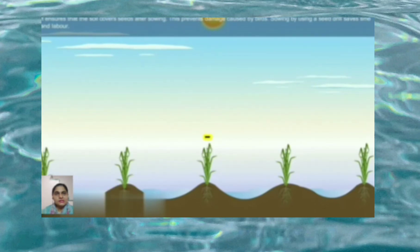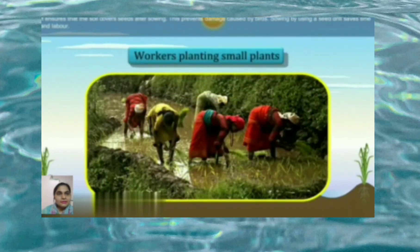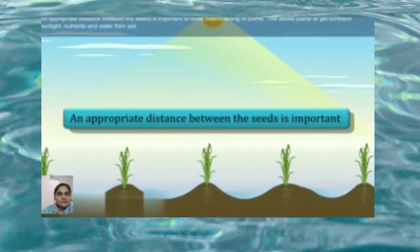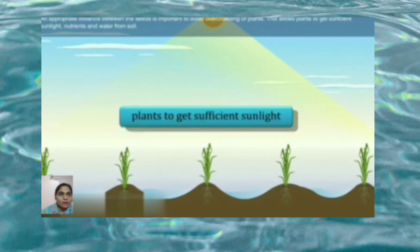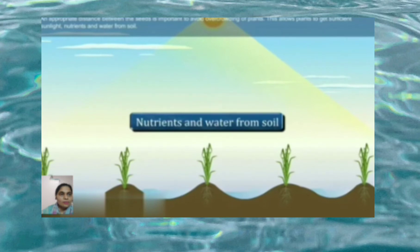It ensures that seeds are covered after sowing, preventing damage caused by birds. Sowing by using a seed drill saves time and labor. An appropriate distance between the seeds is important to avoid overcrowding of plants, allowing plants to get sufficient sunlight, nutrition, and water from the soil.